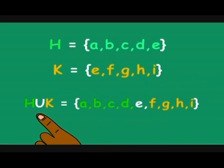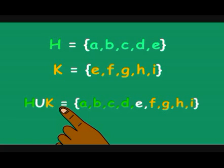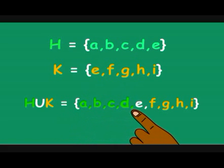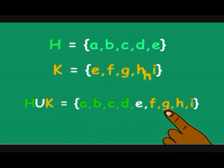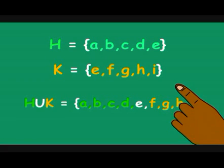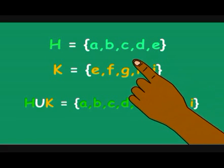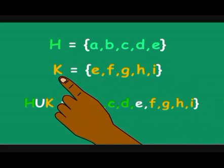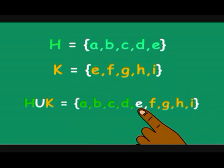So, if we write H union K equals and we open our curly brackets, the members would be A, B, C, D, E, F, G, H, and I. Note that E is in both sets — E is a member of H and a member of K — and therefore we can only count E once. One E would be in our new set, which is the union of H and K.